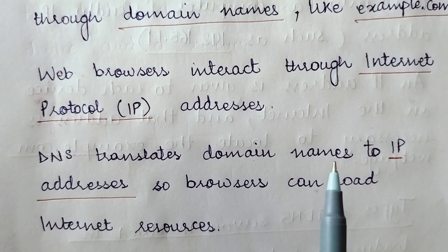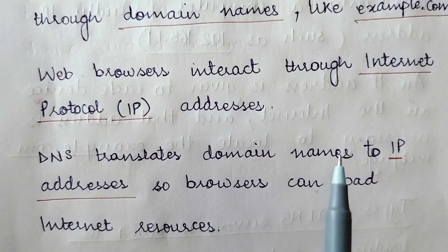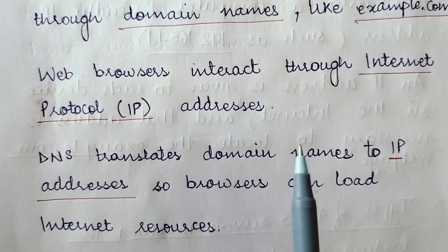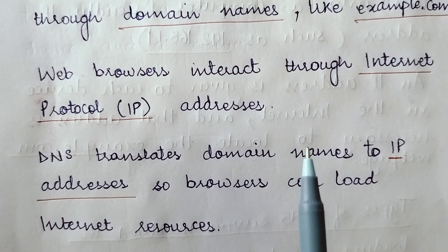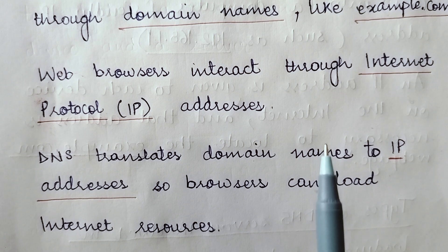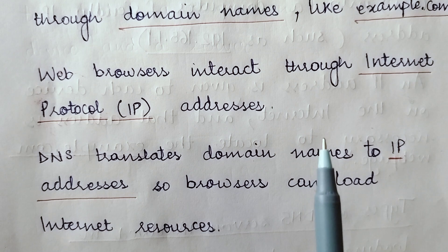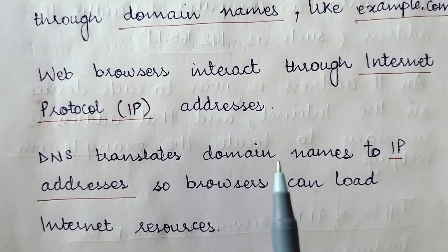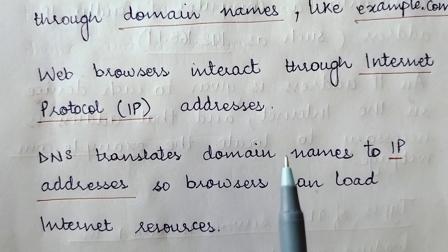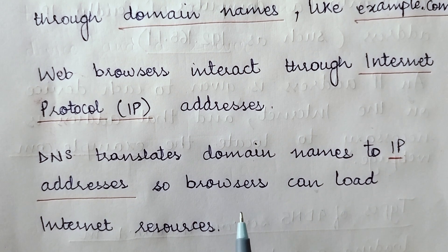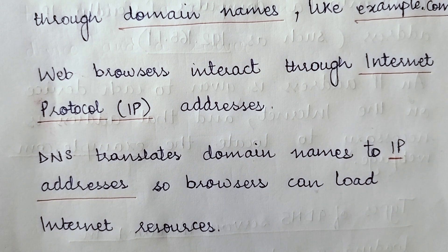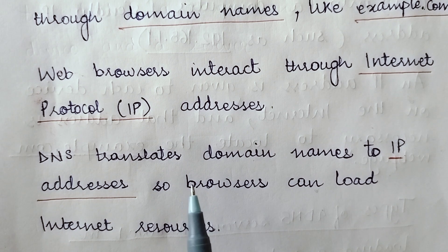When the web browser is interacting with the web server, it is through the IP address and not the domain names. So we as humans identify a particular website through its domain name, and the web browsers identify that particular website through the IP address. So now comes the role of the domain name system.